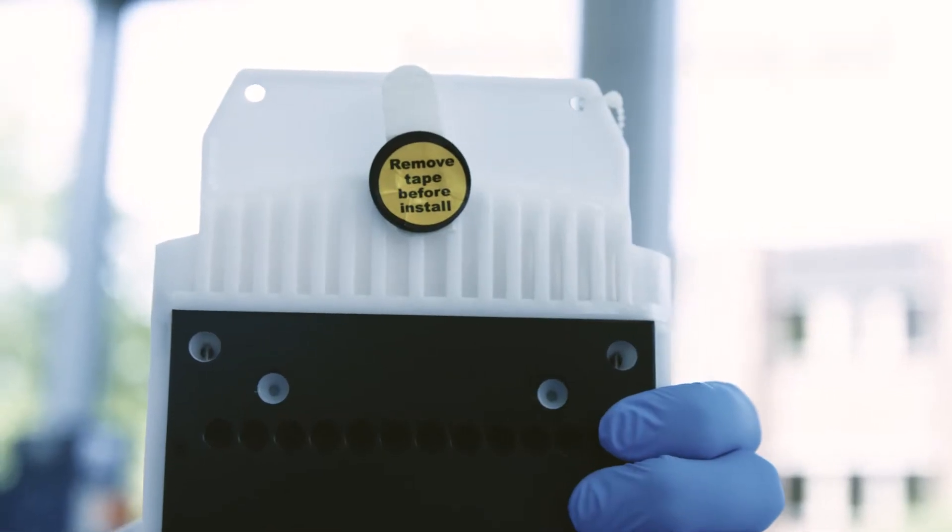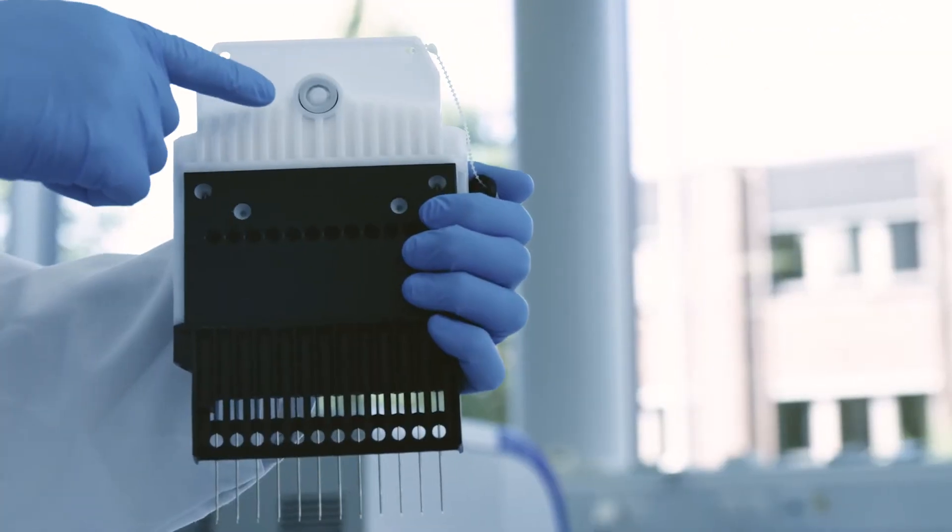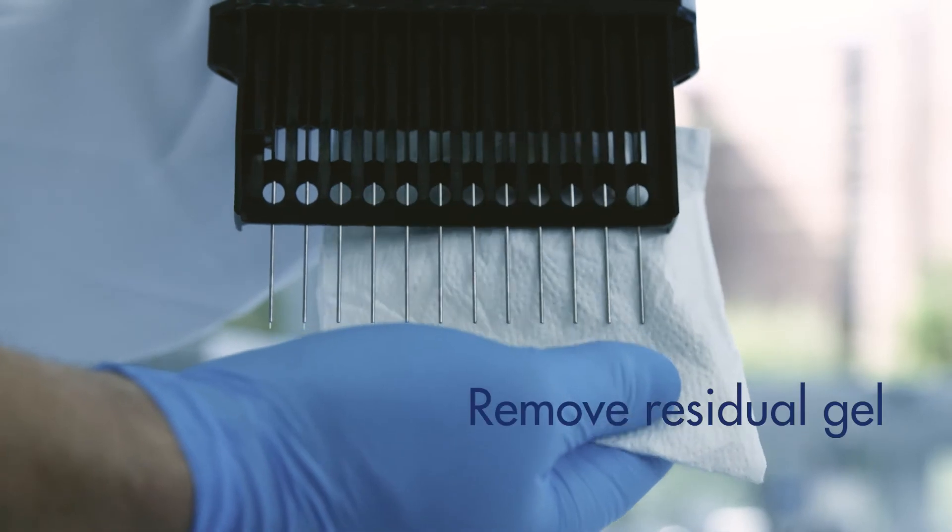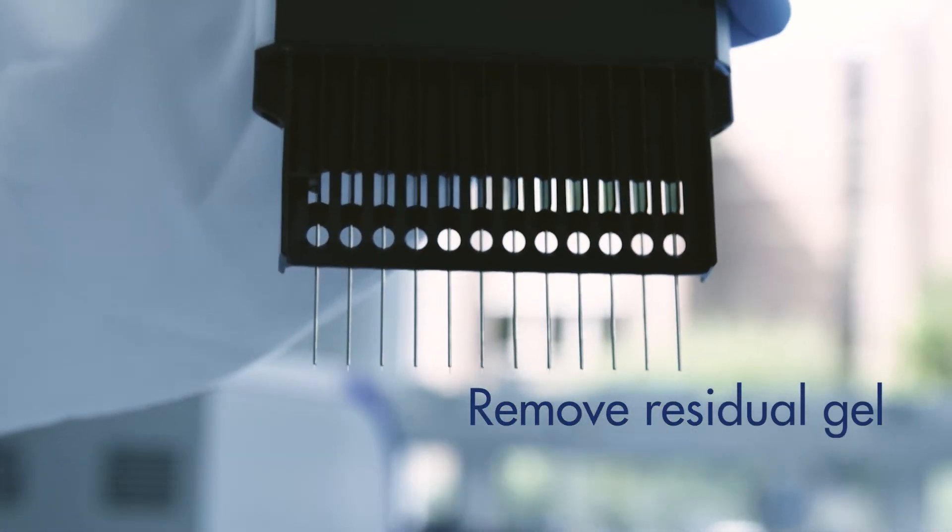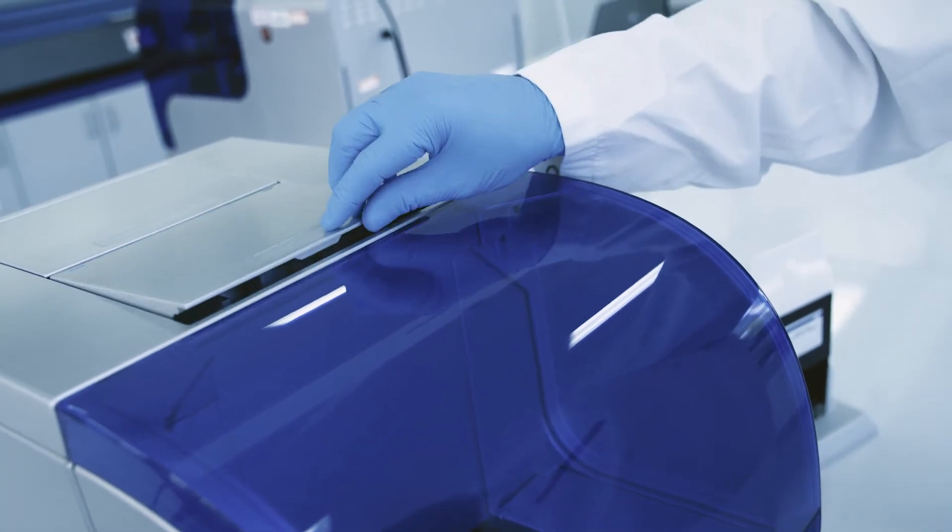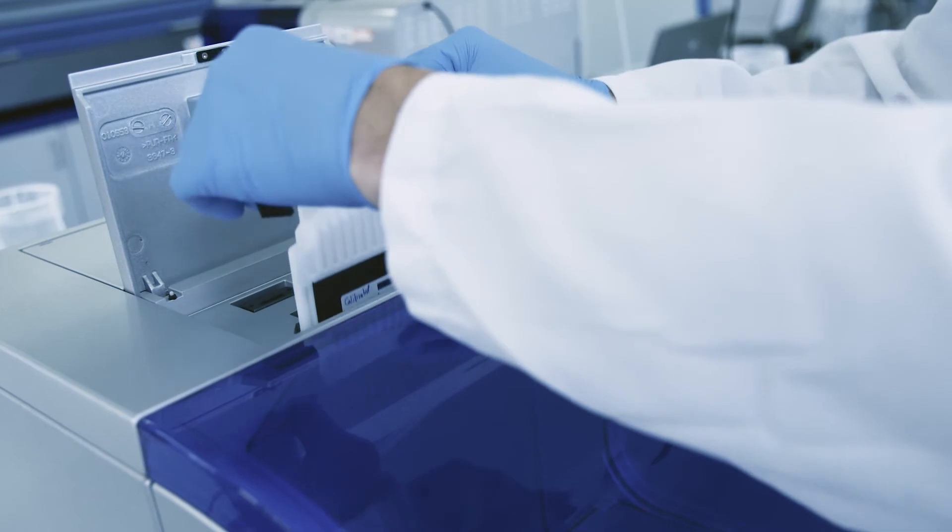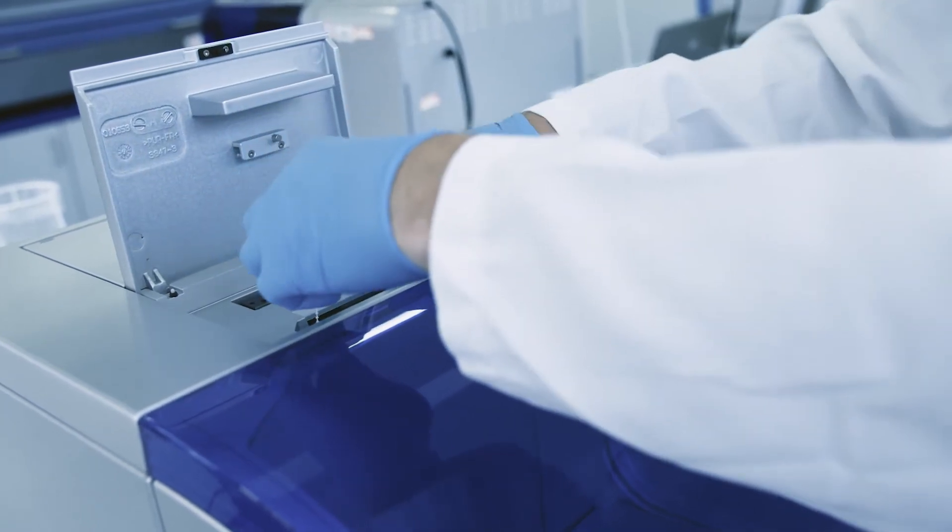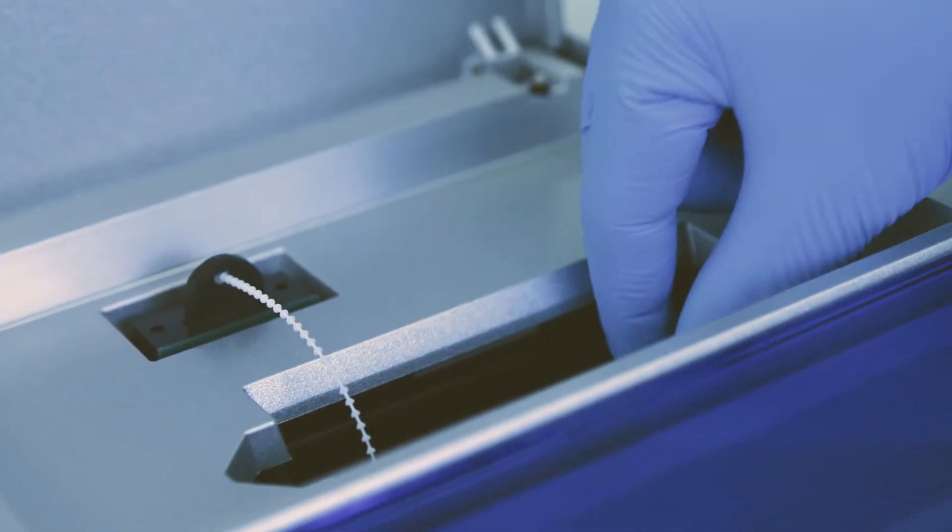Before inserting the cartridge into the Kaixcel Advanced, ensure the purge cap seal is removed. In addition, remove any residual gel or liquids from the capillaries and the purge port. To insert the cartridge, the cartridge door needs to be opened. Insert the cartridge with the description label facing toward the front of the Kaixcel Advanced. After that, insert the smart key into the smart key socket in either direction.